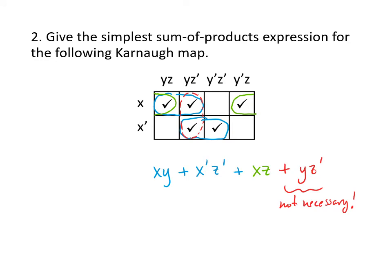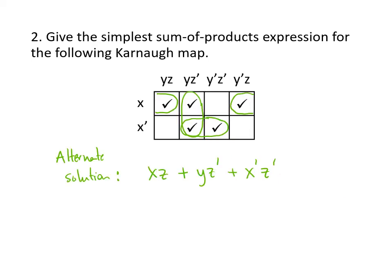We don't need more groups that cover check marks we've already covered. For example, if we added another group for those two check marks in the red dotted circle, that would be y z prime, but we don't need that because we already have all the check marks covered. Once you have all the check marks covered you're done, but you want to cover them with as large groups as you can. Another valid solution uses three groups of two and looks a little different but is just as correct.